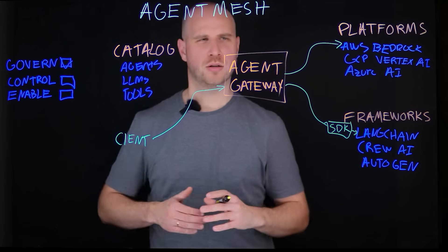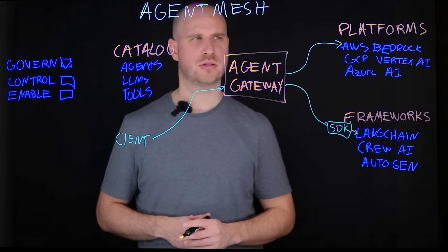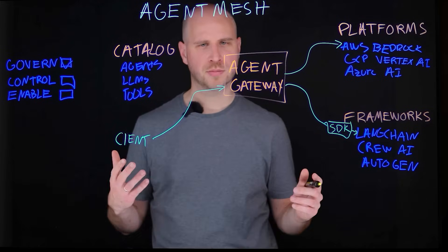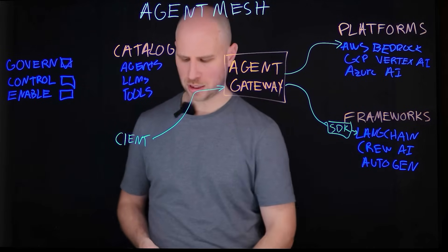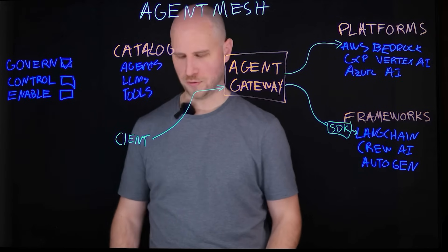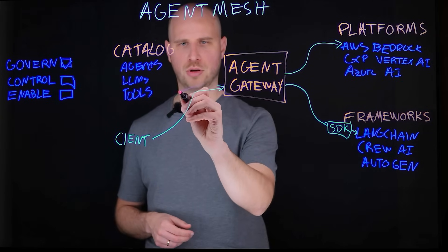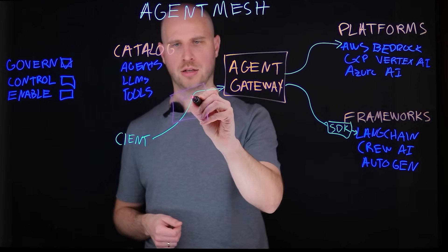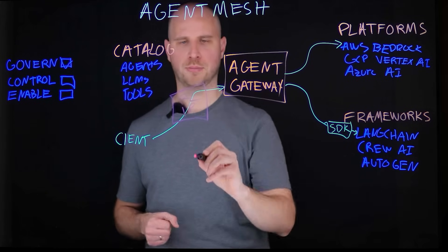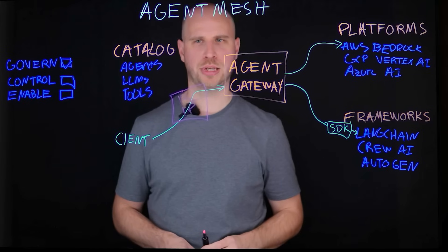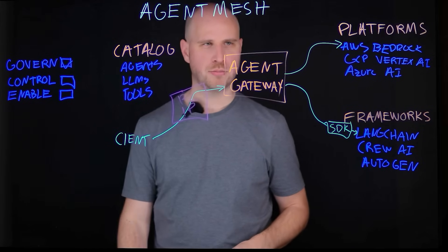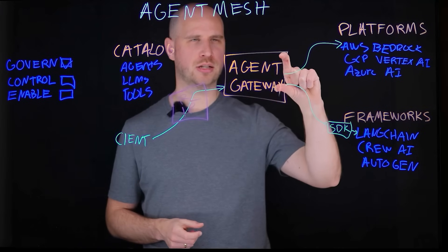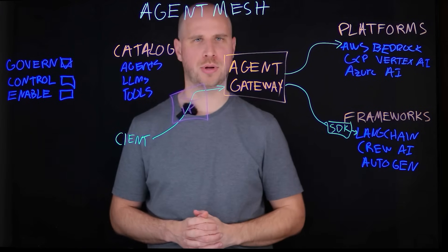So why would you want this agent gateway to sit between whoever is invoking your agent and the agent itself? First of all, you'll have the ability in Gravity to have any sort of policy you might be familiar with — like rate limiting or IP filtering, for example — to control how your agents are actually being invoked.